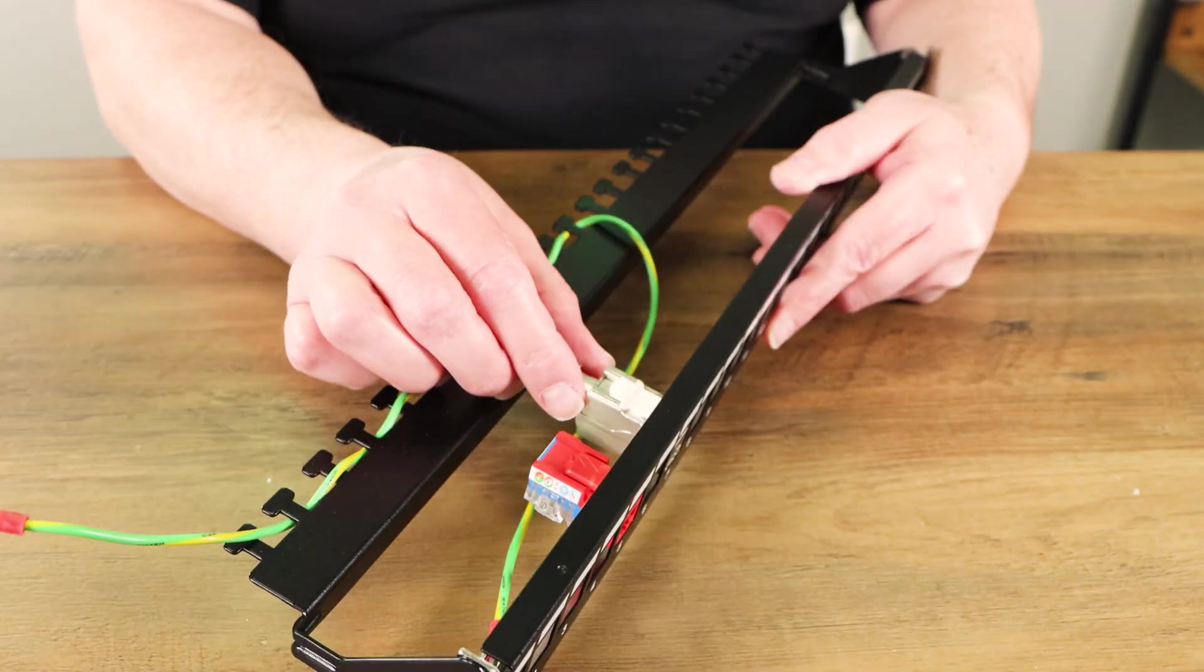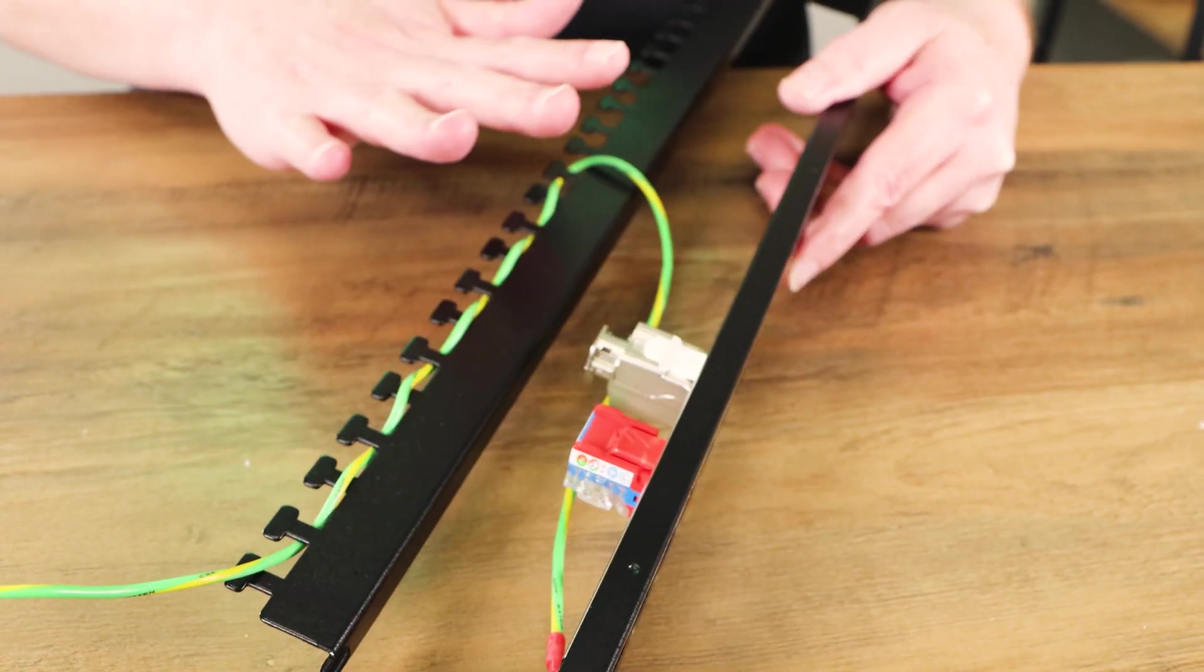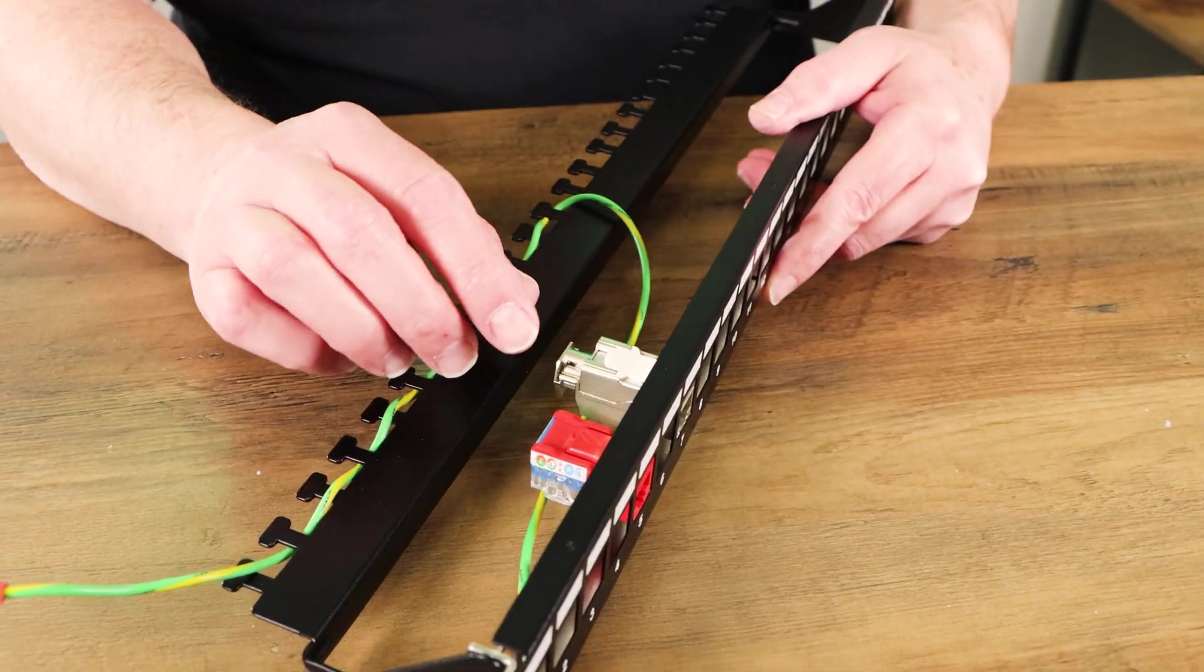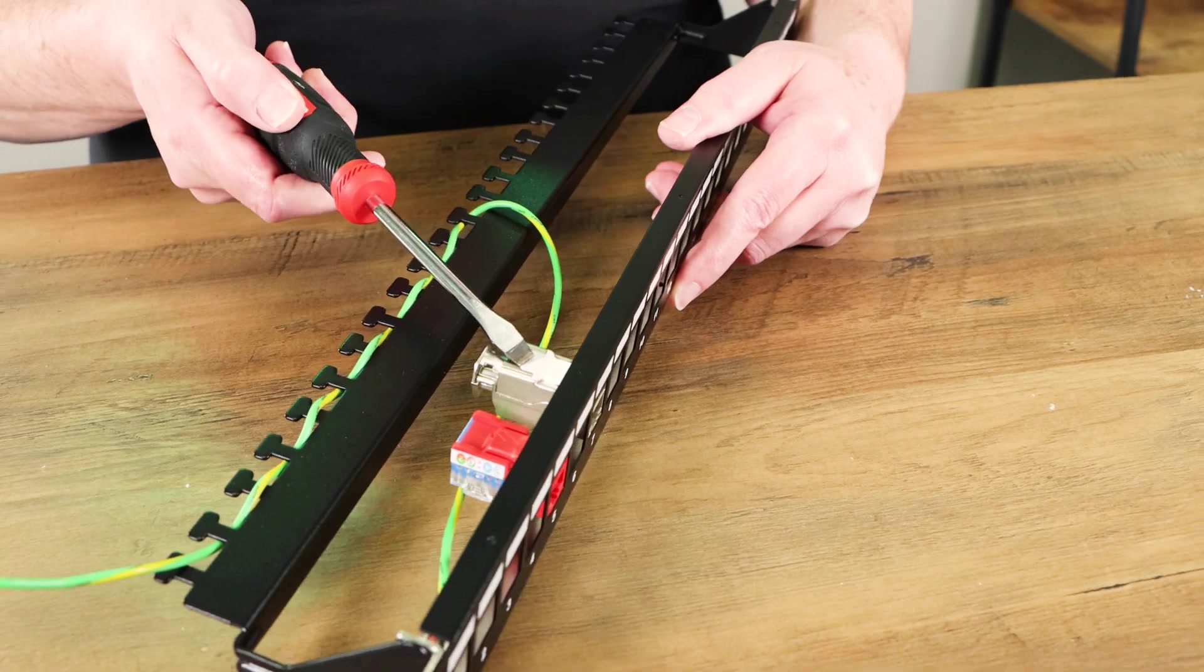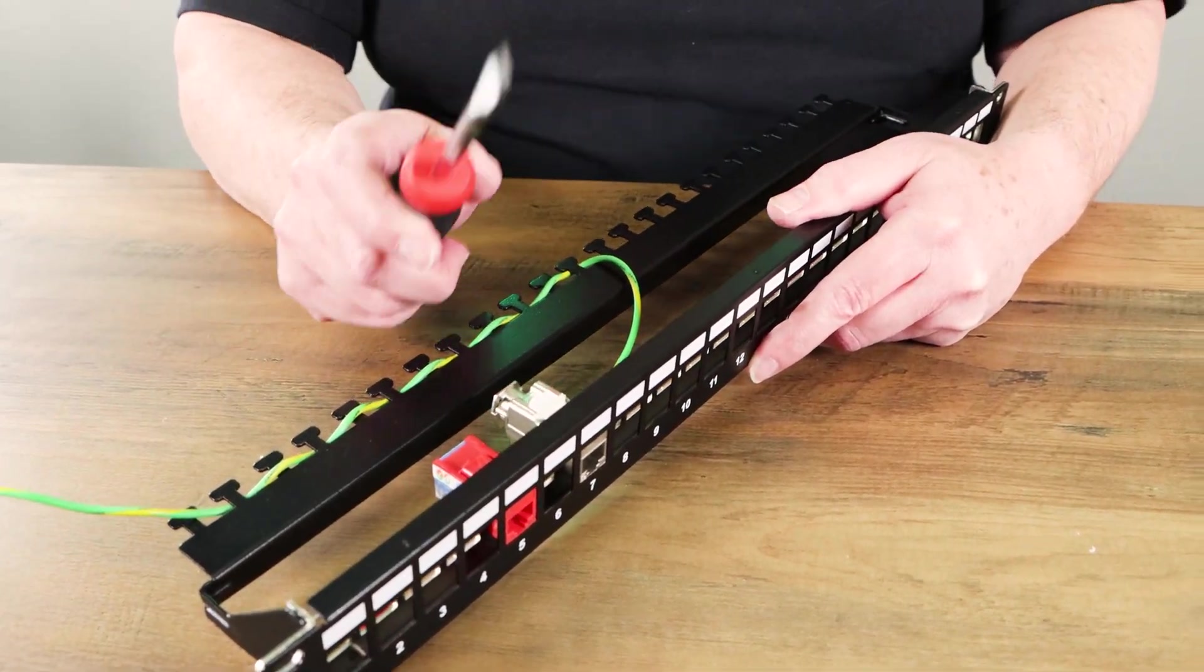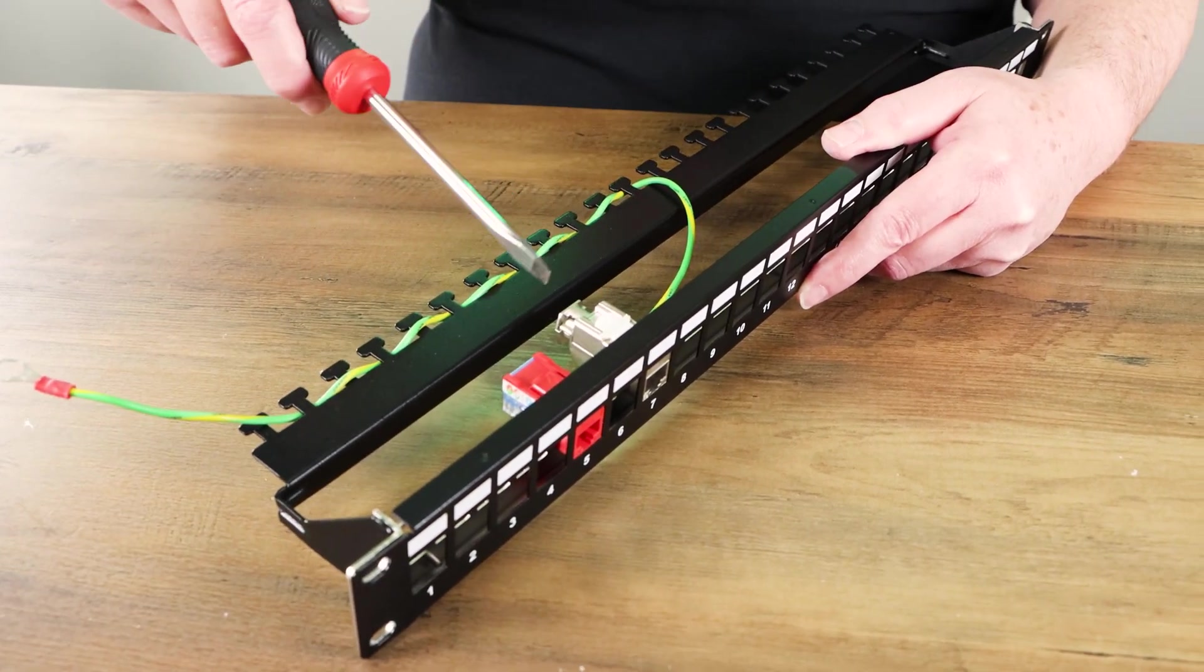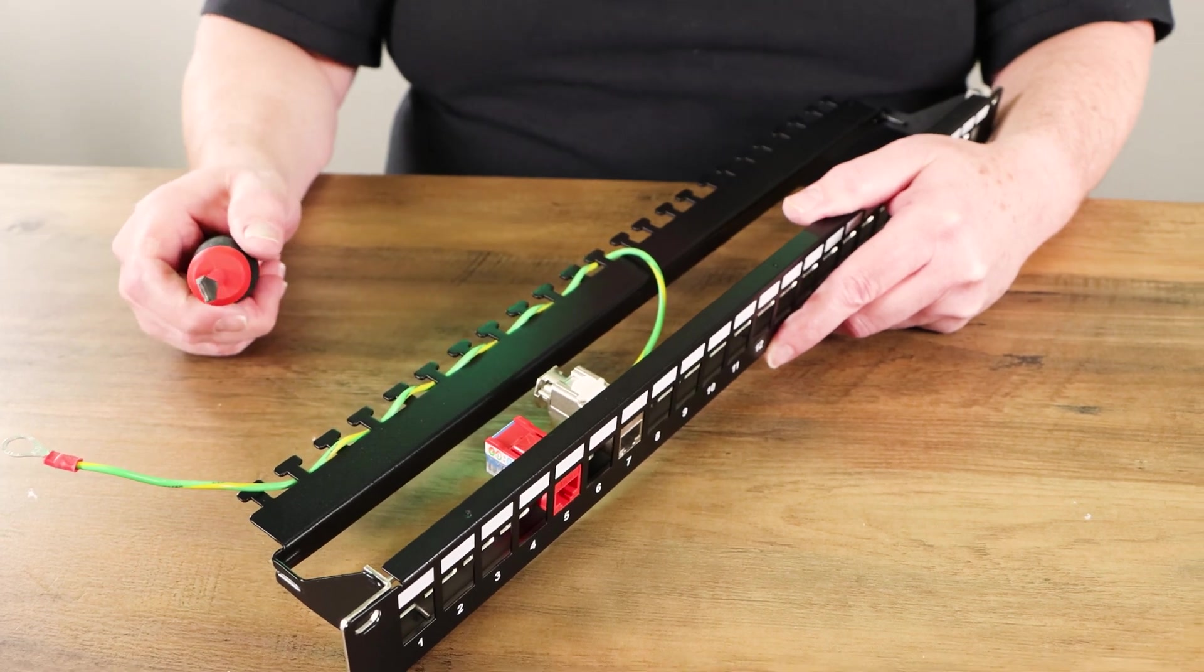Now, if they accidentally put one of these guys in upside down, and I've done it, and I'm sure you probably have too if you've worked with these before, then you're just going to have to get creative about getting in with a screwdriver and removing it without damaging the jack or the panel. There's no quick and easy way around it. However, if you've got a quick and easy way around incorrectly inserting a jack into a patch panel and getting it out easily, that's another comment I'd like you to leave below.